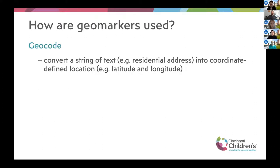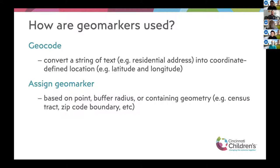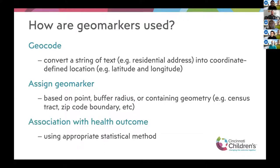I'll give a general overview of how we use geomarkers in a typical setup. The first step is to geocode, which means taking a string of text — usually someone's address — and converting it to coordinates, usually a latitude and longitude. Using that latitude and longitude, we assign the geomarker, which could be based on the exact location, an average within a buffer radius around that point, or within a containing geometry like census tracts or zip code boundaries. Then the modeling step would determine the association of those geomarkers with the health outcome of interest.